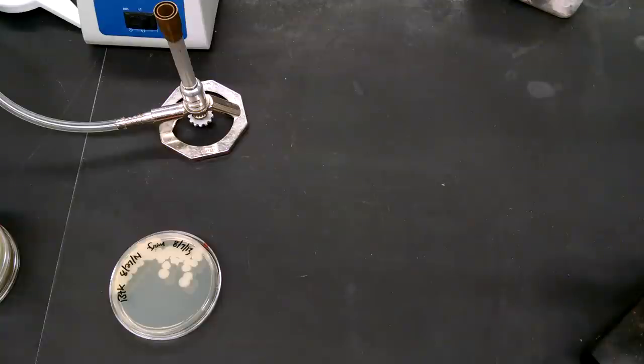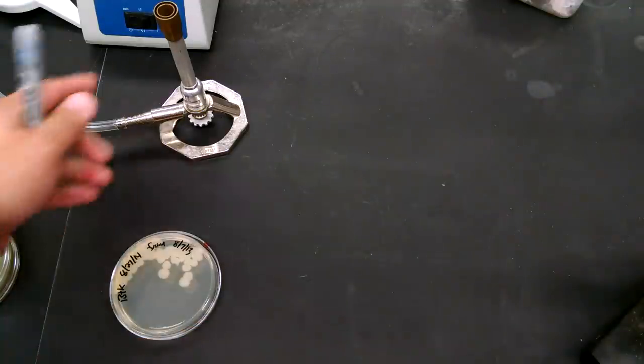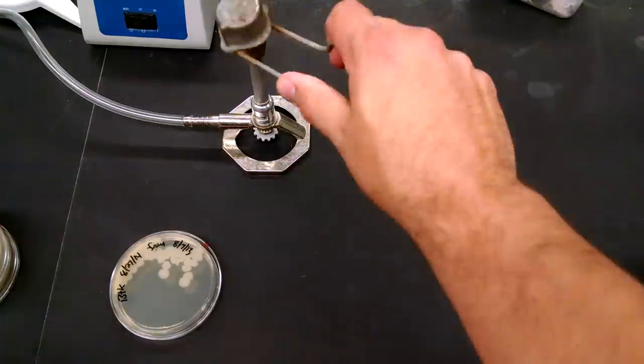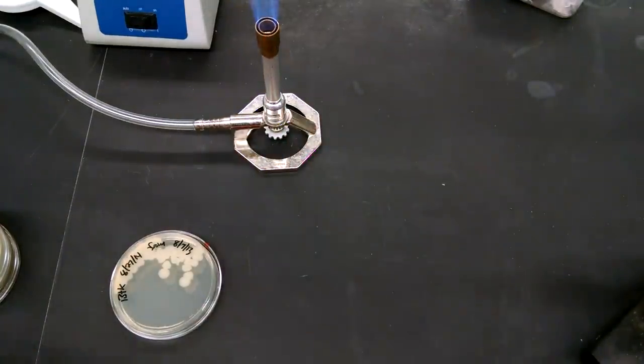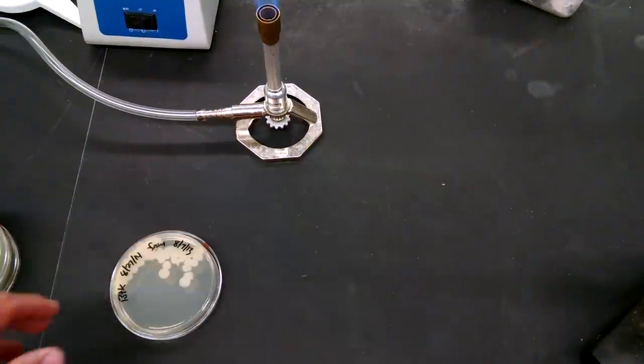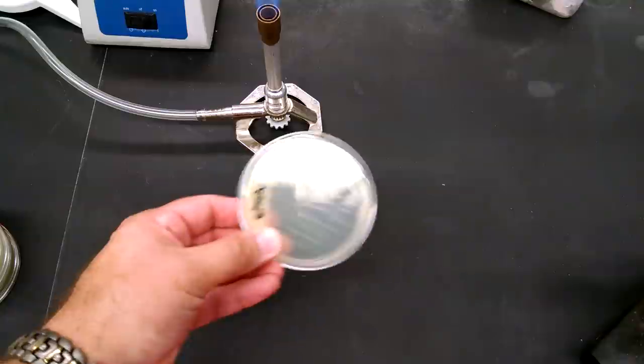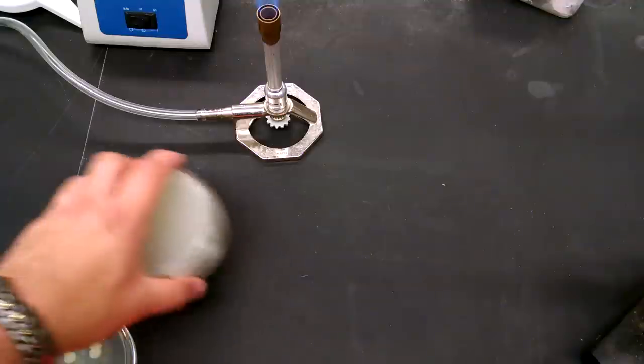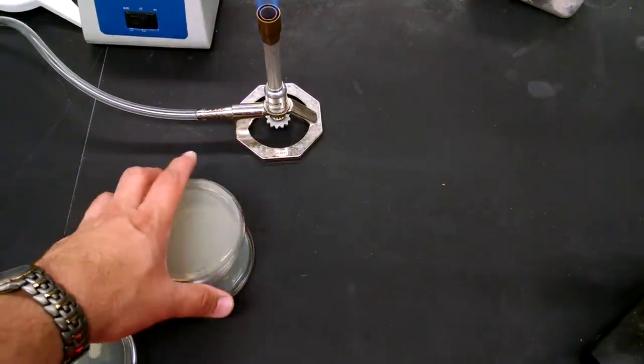Today we're going to demonstrate how to streak a plate. One thing we want to do is make sure we're working aseptically, so we have a Bunsen burner going in the general neighborhood of where we're working. We're going to need something to streak from, so we have some BTK here, and we're going to need something to streak on, so we have some plates.